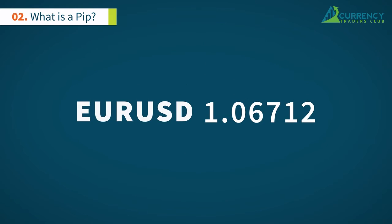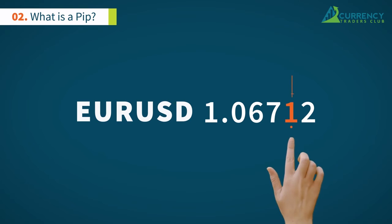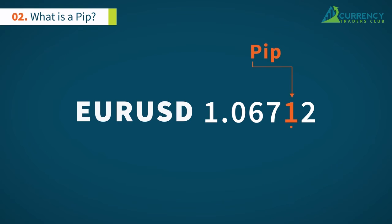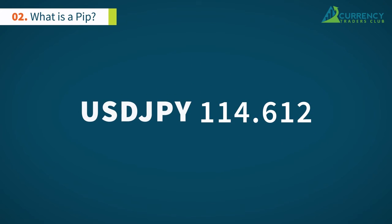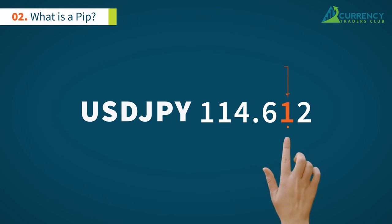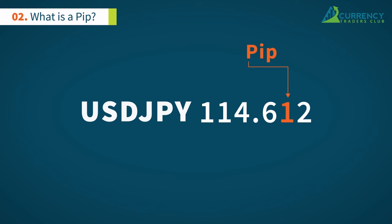Most currency pairs are measured to five decimal places. For pairs like EURUSD, GBPUSD, etc., a PIP corresponds to the fourth decimal digit. Yen-based currency pairs like USDJPY are the exception and are measured to three decimal places. The PIP value is shown in the second decimal digit.